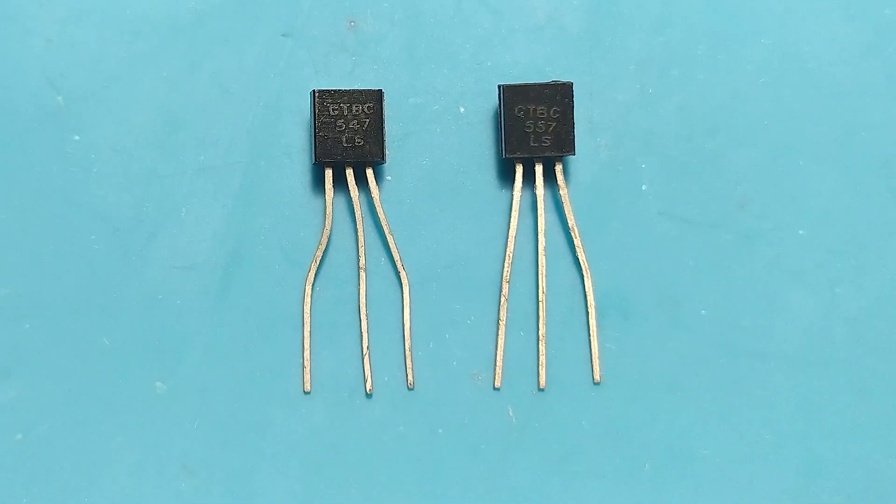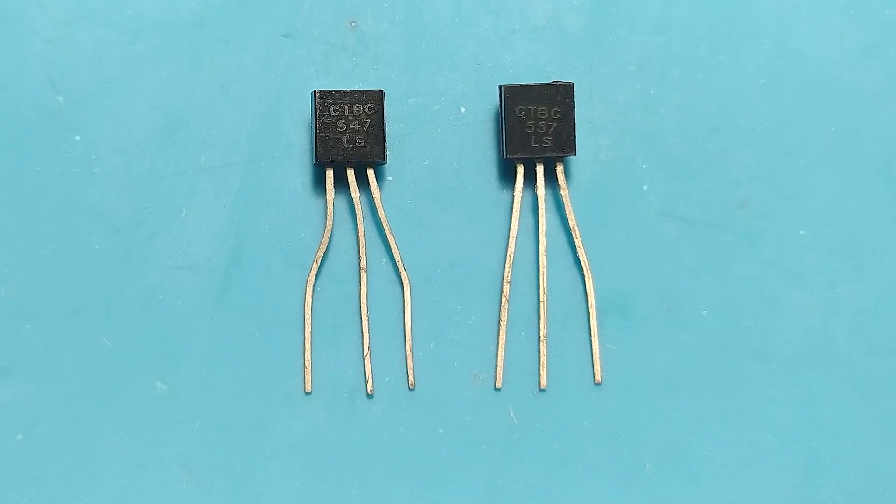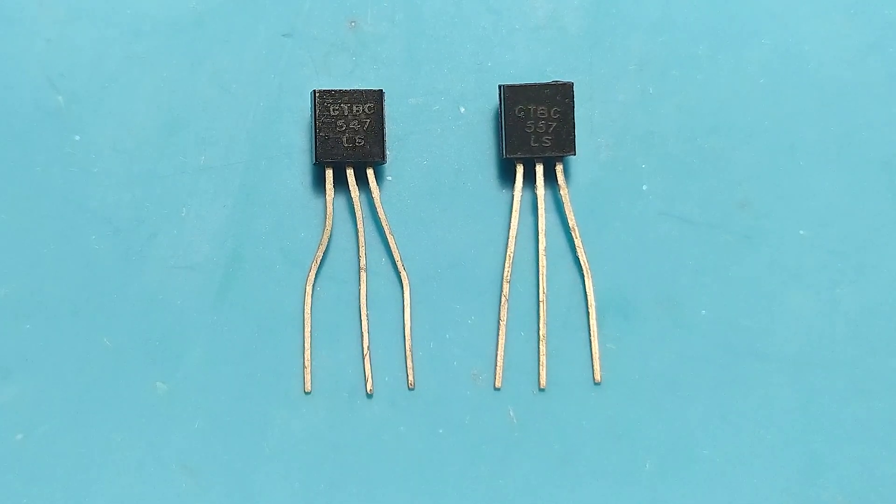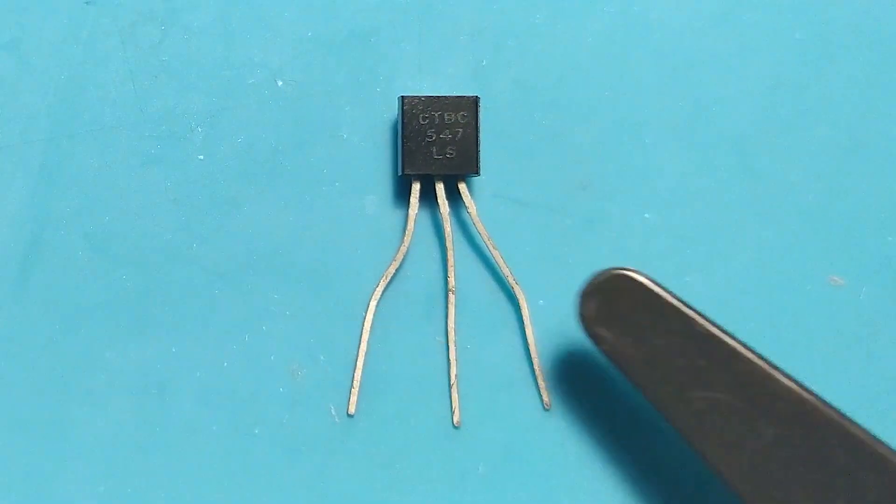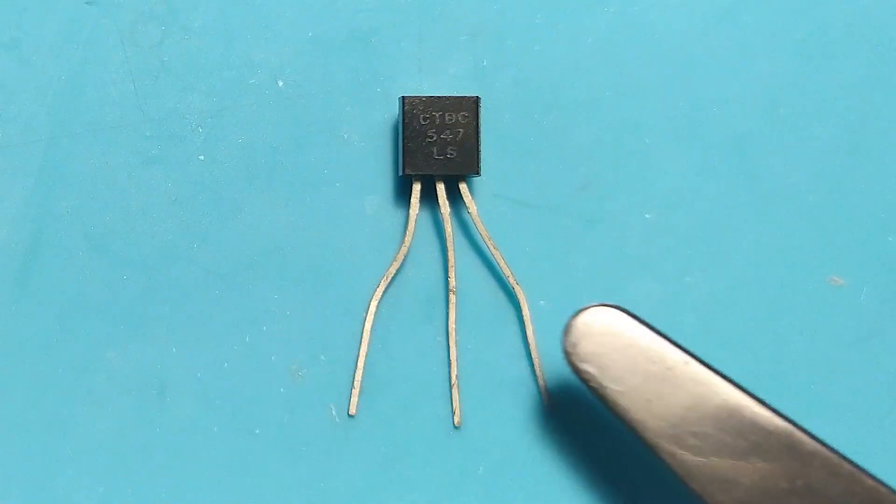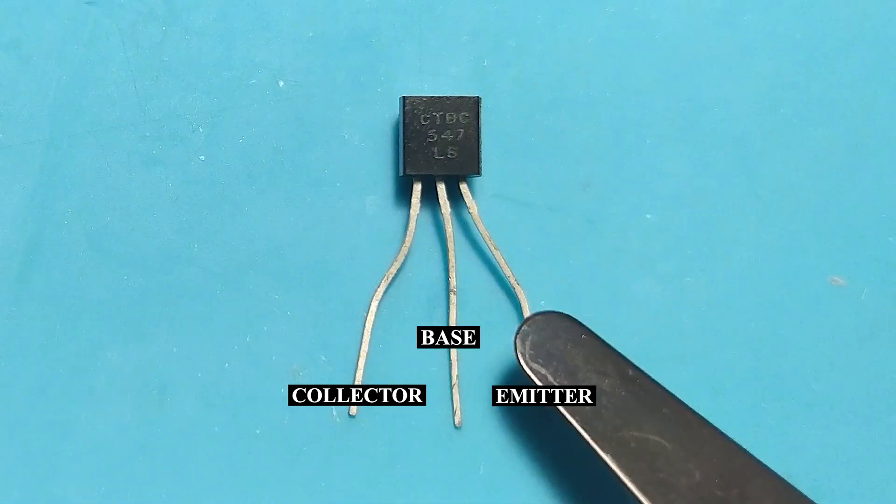The pin configuration of BC547 and BC557 transistors is as follows. Looking at the transistor with the marked area facing us and with the terminals pointing down, from left to right, we have collector, base and emitter.